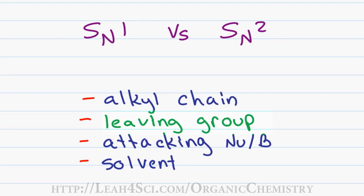The leaving group is very important in SN1 because it has to leave by itself causing a carbocation to form, not as important in SN2 because the nucleophile will kick it out.